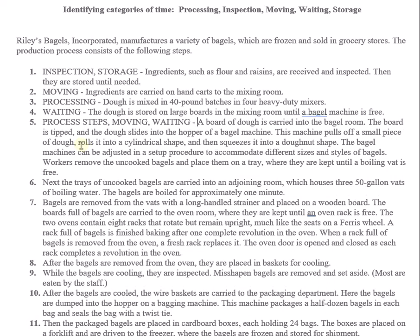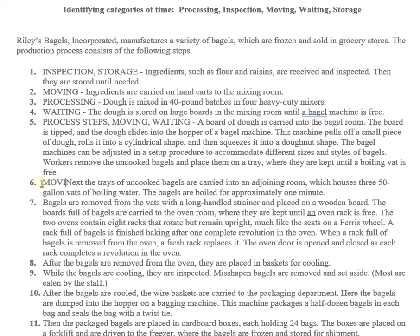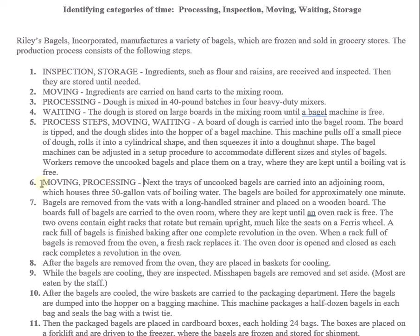Step six: trays of uncooked bagels are carried into an adjoining room housing 350-gallon vats of boiling water, and the bagels are boiled for approximately one minute. So step six involves both moving and processing.